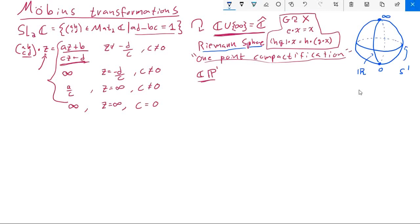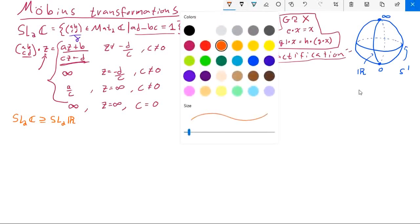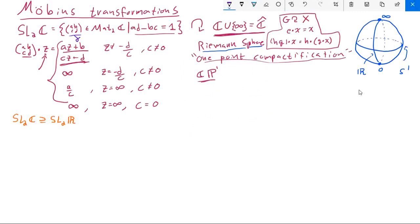But the approach that we're going to take to starting to understand some of the actions, some of the ways that the action behaves on the sphere, is by looking at how certain subgroups of SL2C behave on this sphere. So we've already looked at the action of SL2C. And now we're going to look at a subgroup, SL2R. So this is, again, just two by two matrices of determinant one. But now we're restricting their entries strictly to the real numbers.